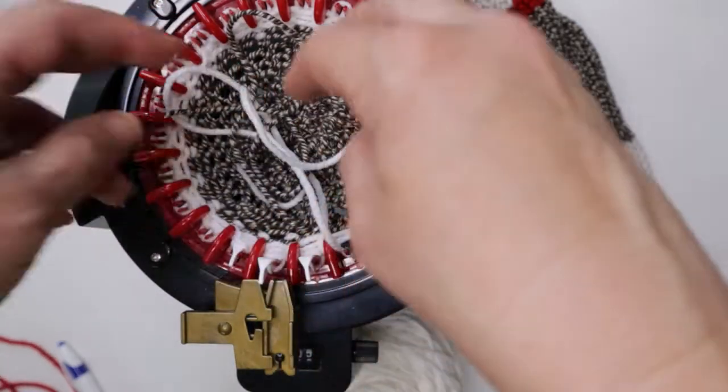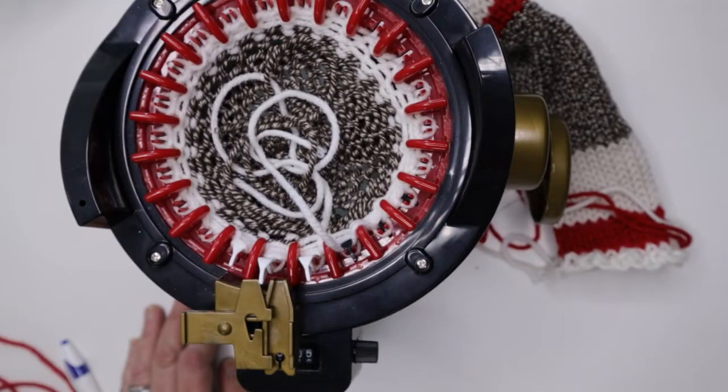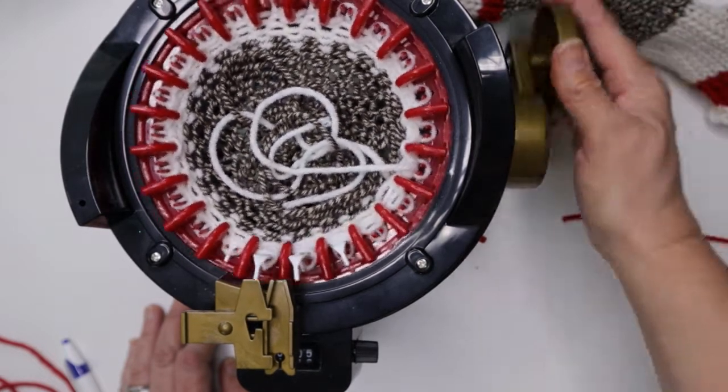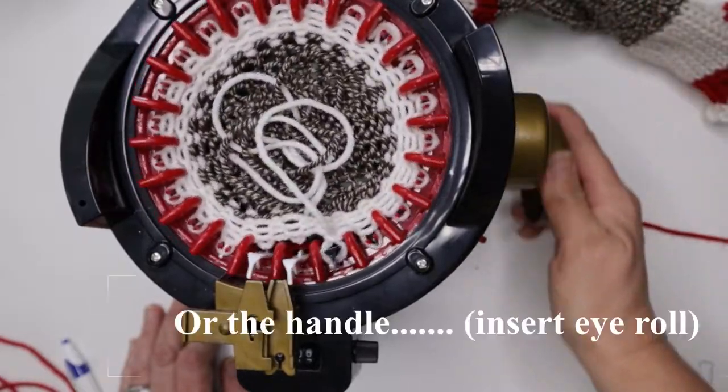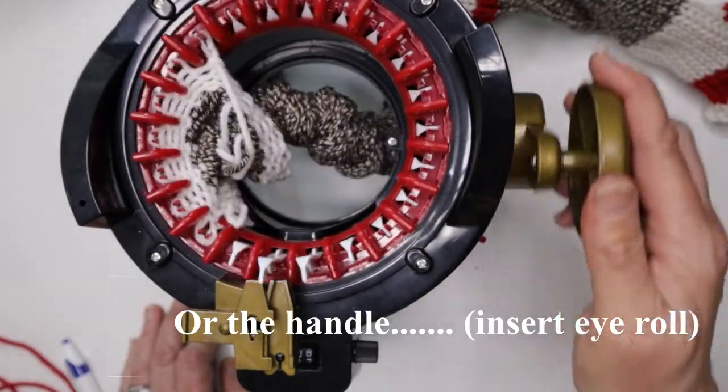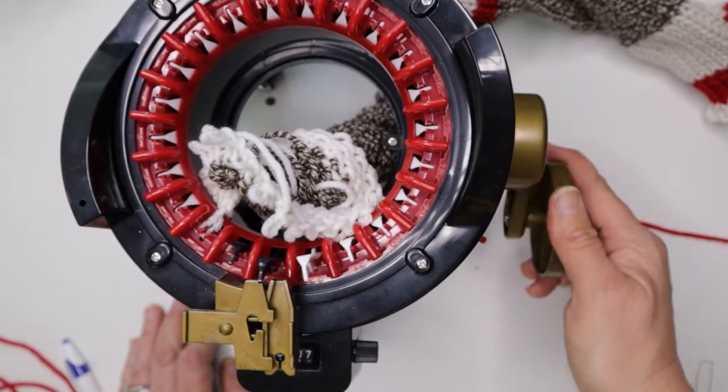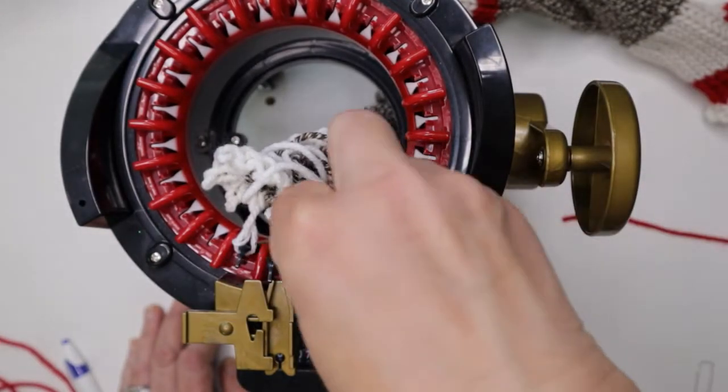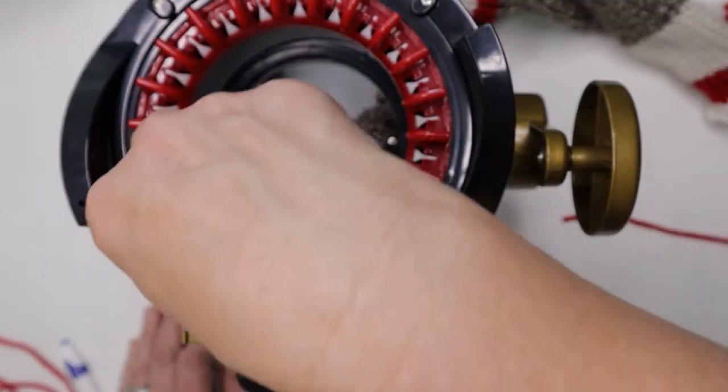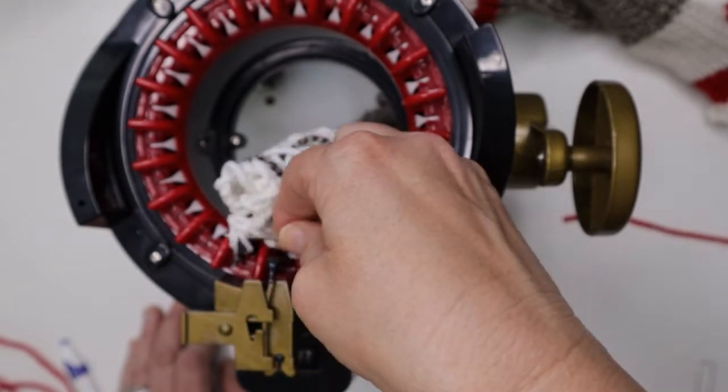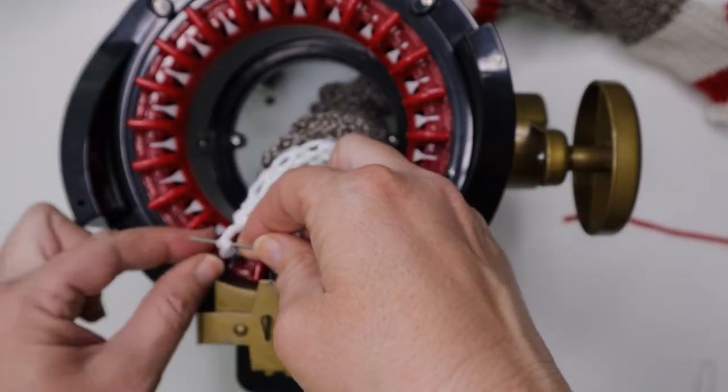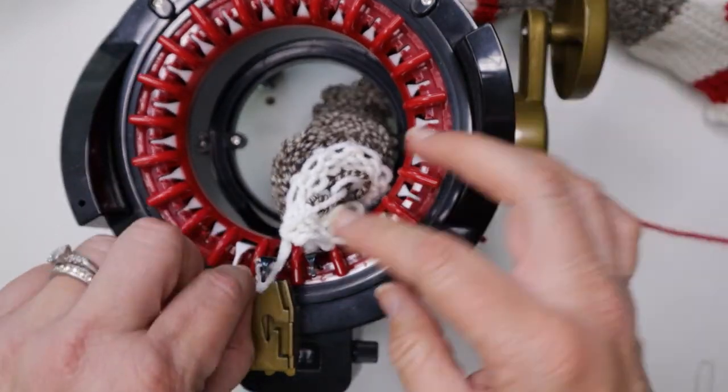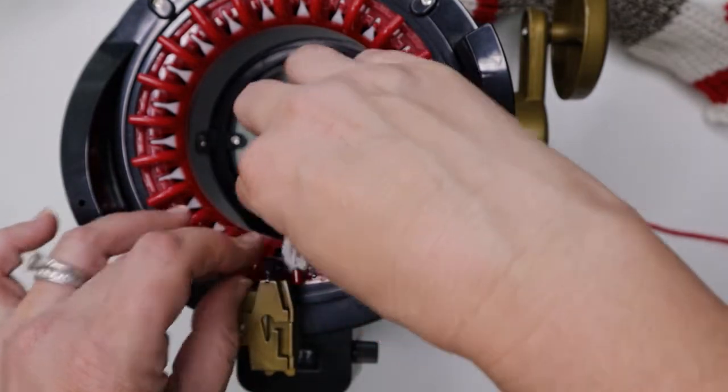We're going to take this tail and put it into the center. To get our scarf off of the machine, you just crank the hook and the stitches start to come off. Sometimes they get stuck like this one right here. We'll just grab our little needle and get that little guy out of there. There we go.